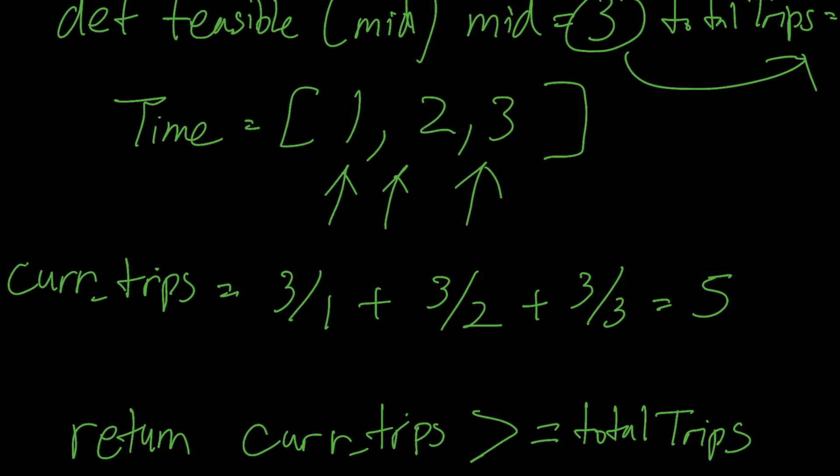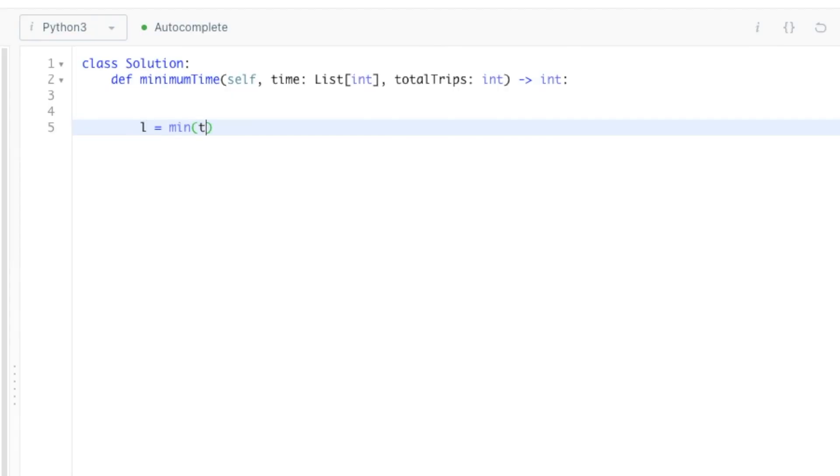All right, now we have all three parts, so let's implement that into the code. Okay, so let's start with step one. Let's set our left pointer at min time, and then our right pointer at min time times total trips. Then we'll fill out the rest of our binary search template, where the while loop left is less than right, calculating the midpoint, and setting the conditions where to adjust the midpoint based on the result of the binary decision function, or feasible function in this case.